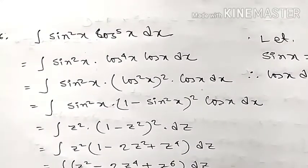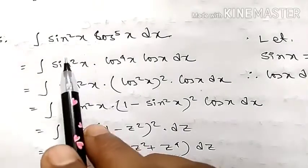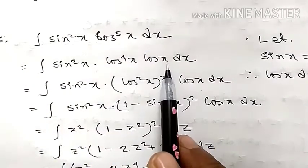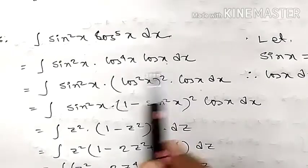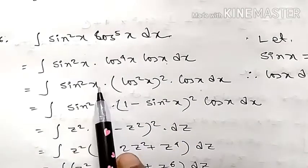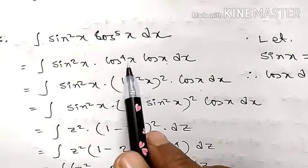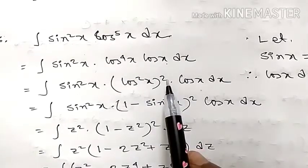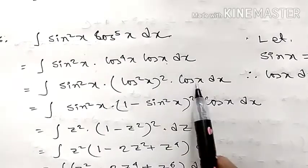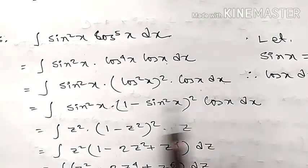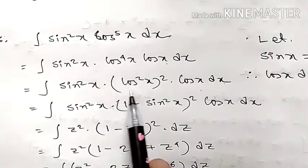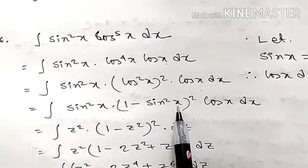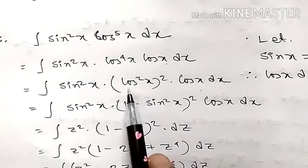What is the case of z? Each of the cases is the case. This is the case of z — whole square into cos x dx. Next line: sin²x, whole square.